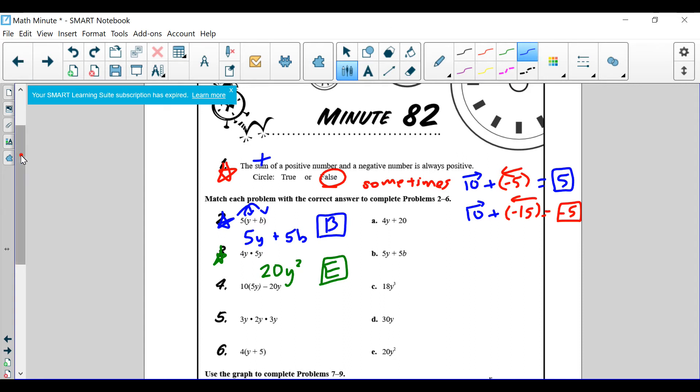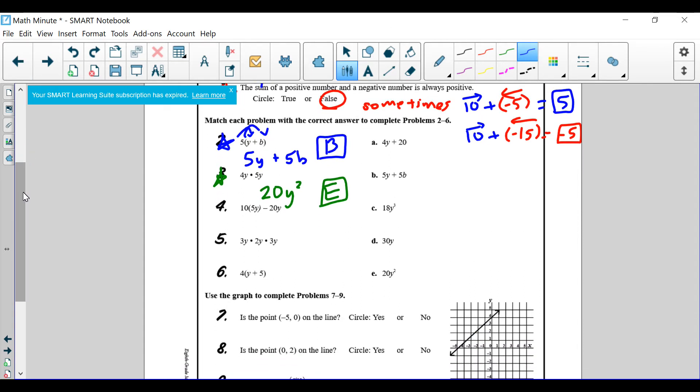Now let's continue. We've got number 4. Number 4 says 10 times 5y, minus 20y. 10 times 5y, that's gonna be 50y, minus 20y. You'll notice that 50y and 20y are both the same term value. They both have a y in it, so we can combine them. So 50y minus 20y will equal to 30y. And which one is equal to 30y? That is d.